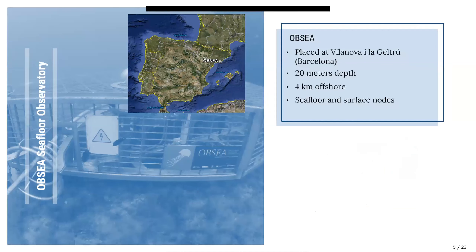Here we can see the map with the location of OPSI. It's in the northeast of Spain in Villanueva-Geltrú, which is south of Barcelona, at a depth of 20 meters, four kilometers offshore. It has two nodes: a surface buoy and a seafloor node.